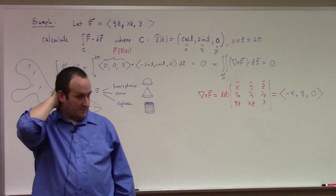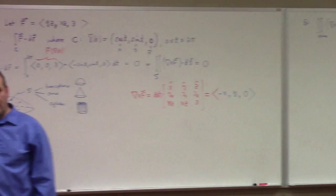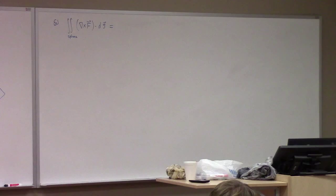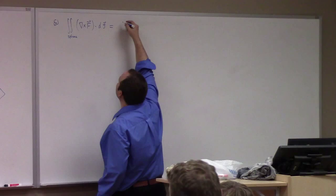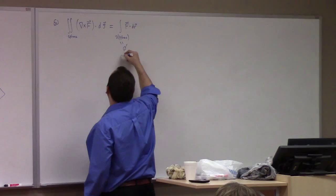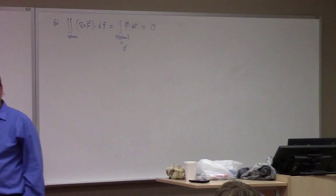Think about the proof we just went through. If you tile the sphere, what's the outer edge of the triangles? There aren't any — there are only inner edges. So what's the boundary of the sphere? It's empty. So if we apply Stokes' theorem, we get the integral over the boundary of the sphere of F dot dr — but this is the empty set, so it's zero. The integral of a curl over any closed surface is zero, by essentially the same argument.